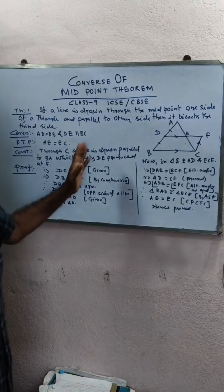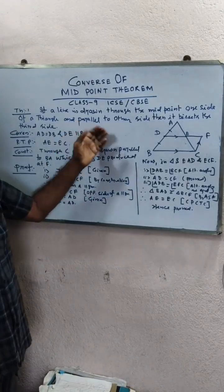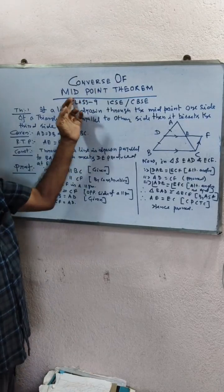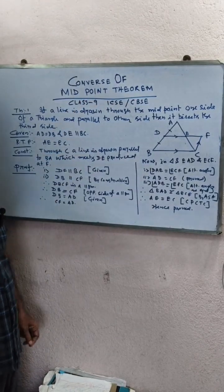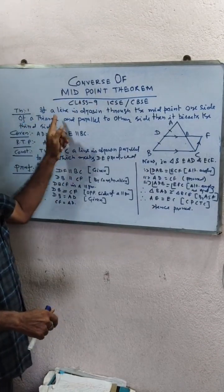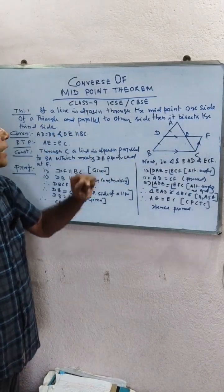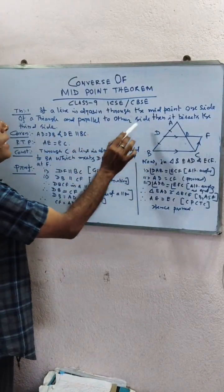Hello students, in this video I will give the ideas to solve the converse of midpoint theorem. The theorem states: if a line is drawn through the midpoint of one side of a triangle and parallel to another side, then it bisects the third side.